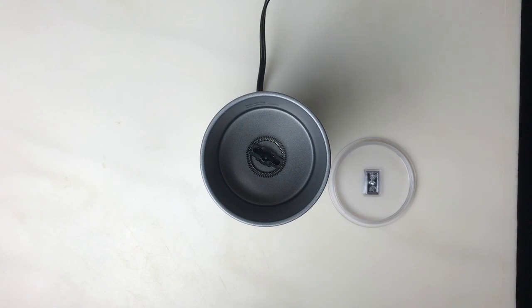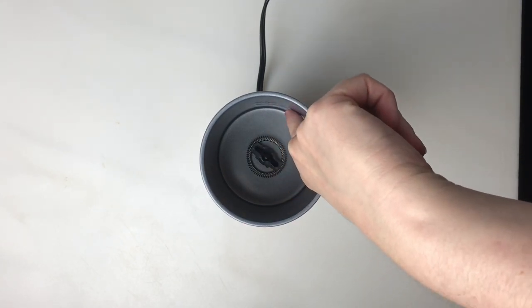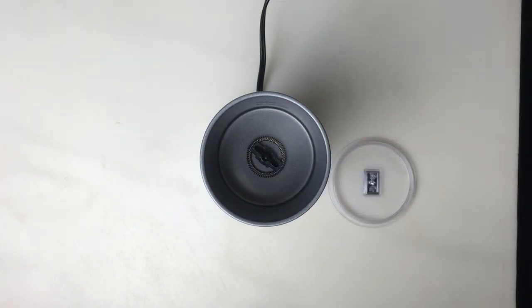It can be a little hard to see, but inside the canister are three fill lines: a minimum, a max frothing line, and a max heating line.